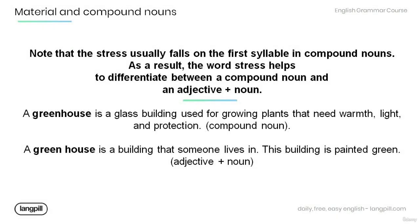Note that the stress usually falls on the first syllable in compound nouns. As a result, the word stress helps to differentiate between a compound noun and an adjective plus noun. For example: 'A greenhouse is a glass building used for growing plants that need warmth, light, and protection' — greenhouse is a compound noun here. But in 'A green house is a building that someone lives in — this building is painted green', the words green house form an adjective plus noun.